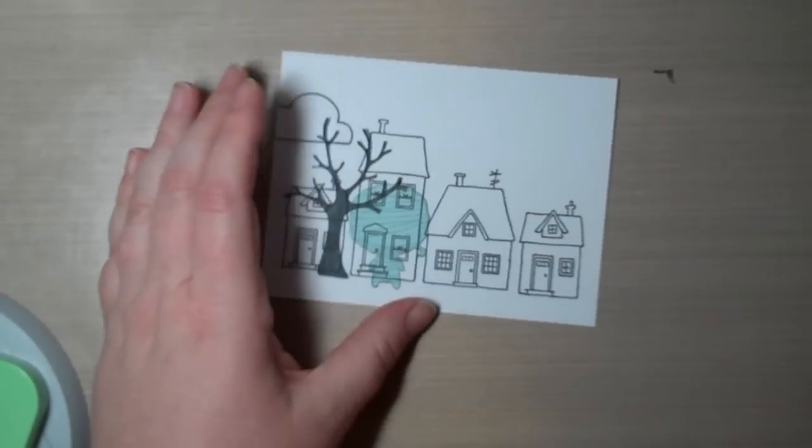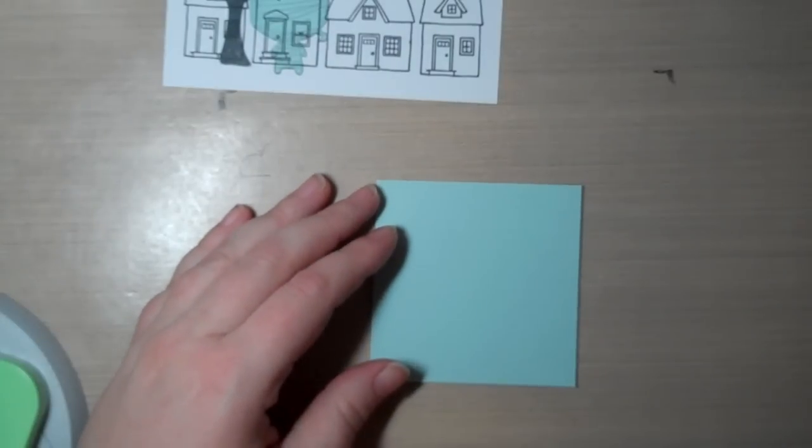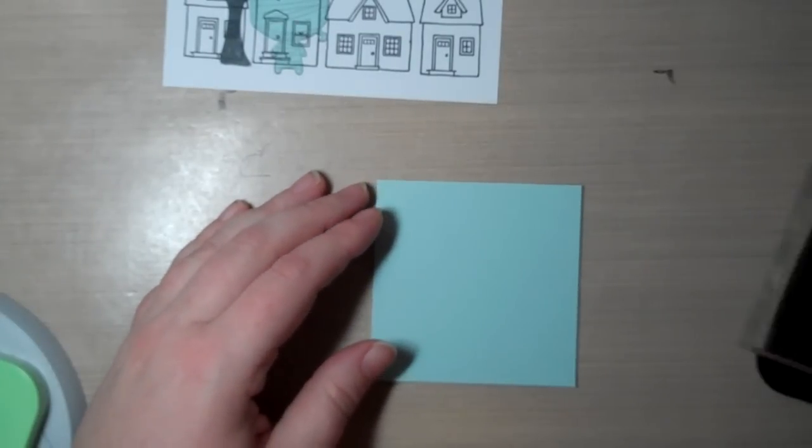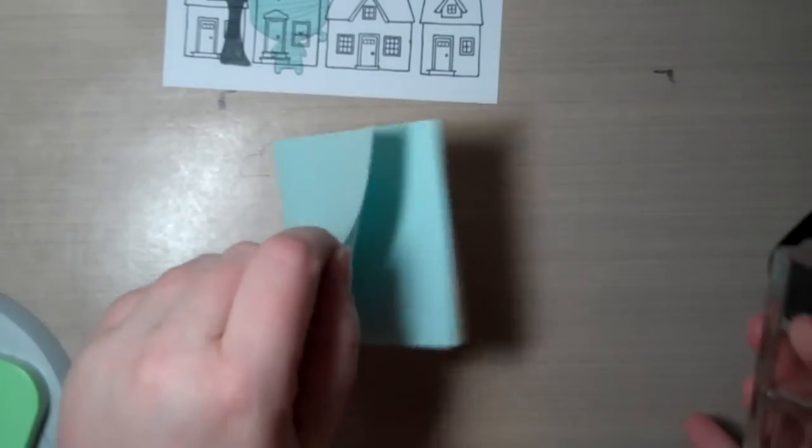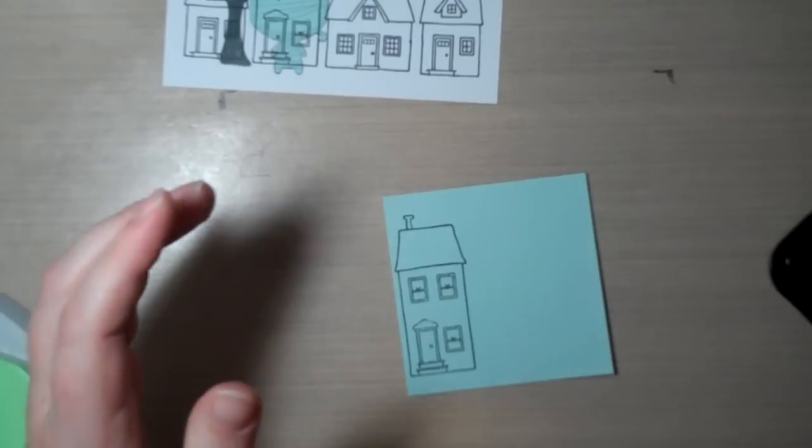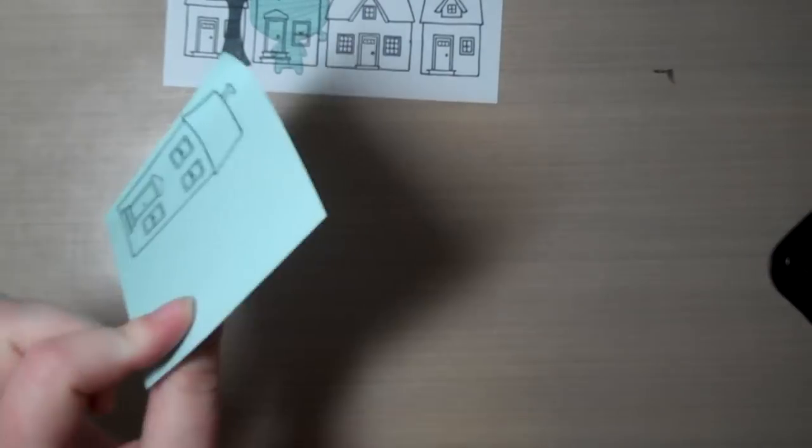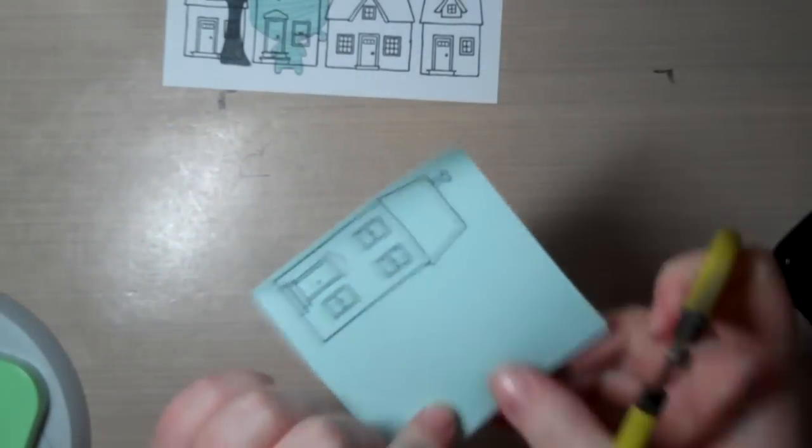Let's really quickly, we'll get one more time masking on here. Take that big house. Let's find my sticky side. Put it on here. And we'll cut this.